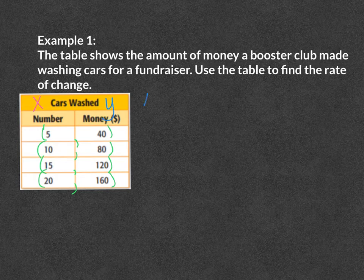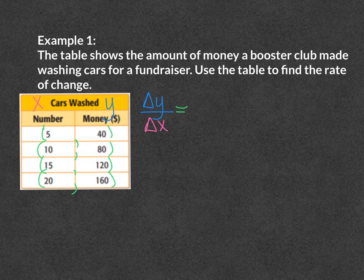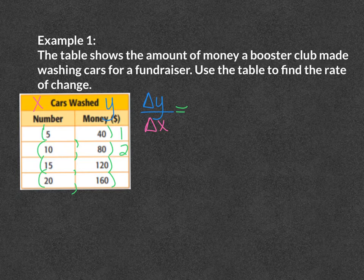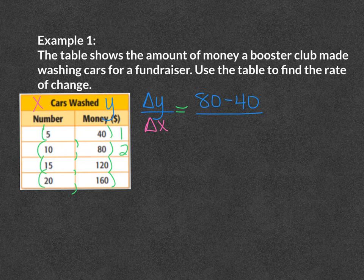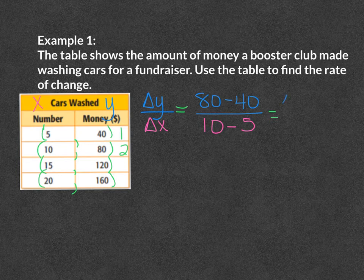Now to find the rate of change, it is the change in y over the change in x. I am going to number my ordered pairs — this is the first one, this is the second one. I am going to start with my y values, beginning with the second one. So the second y is 80, minus the first y which is 40. Now my x values: the second x is 10 minus the first x which is 5. 80 minus 40 gives me 40, and 10 minus 5 gives me 5. So 40 divided by 5 gives me 8.